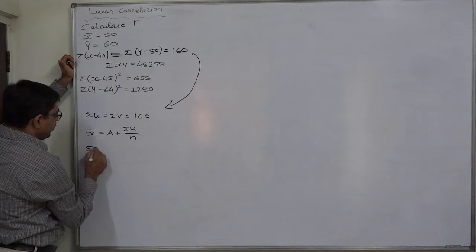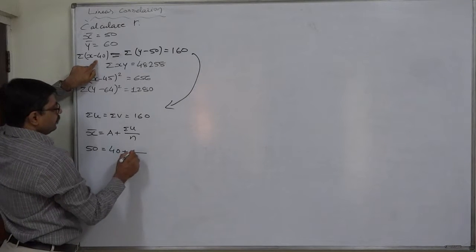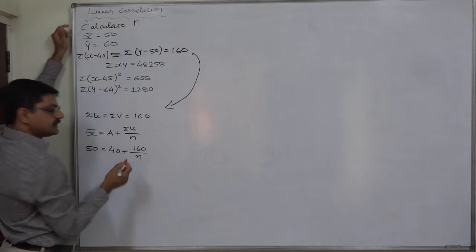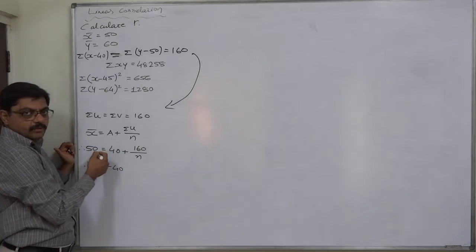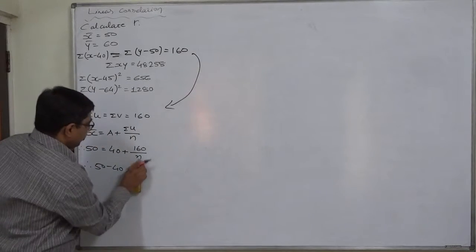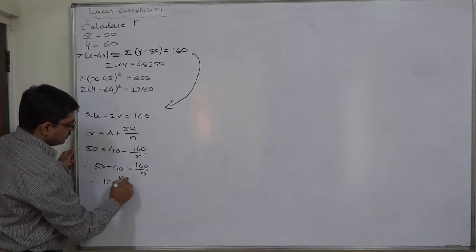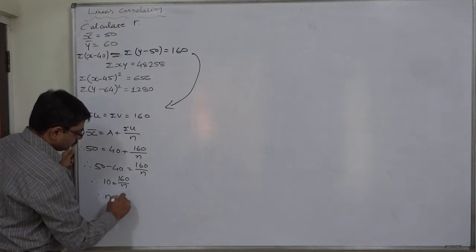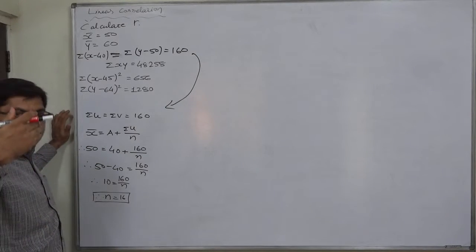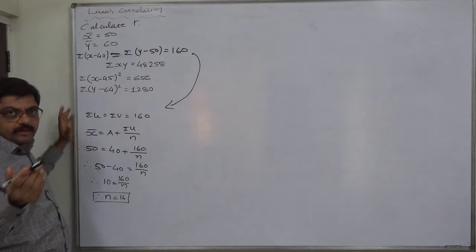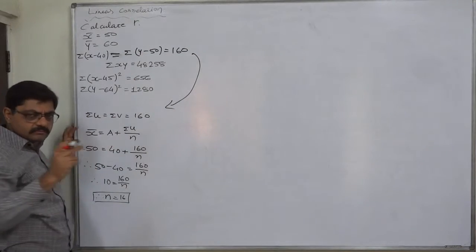x-bar is given to be 50. If we treat sigma(x minus 40) as sigma u, then a = 40 and sigma u = 160. So: 50 minus 40 = 160 / n, giving 10 = 160 / n, therefore n = 16. You can also use y-bar to verify — I leave it as practice. It must also give n = 16.